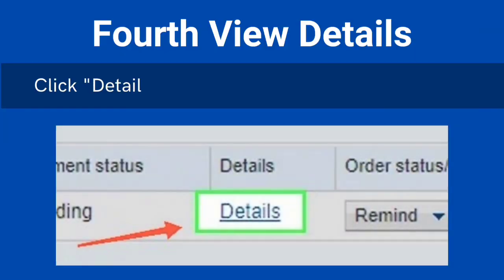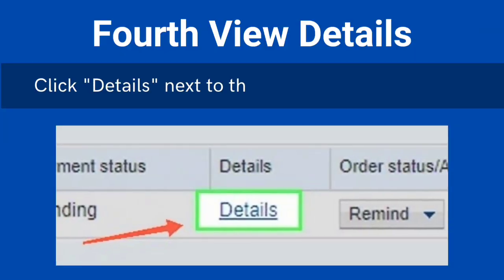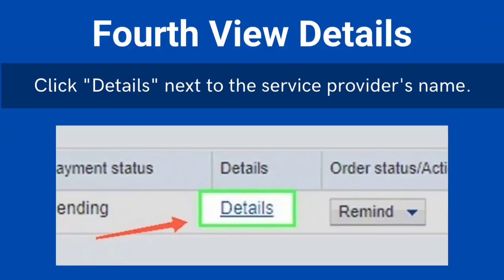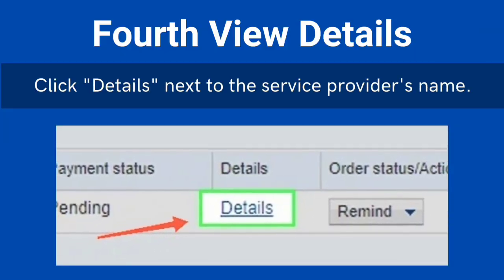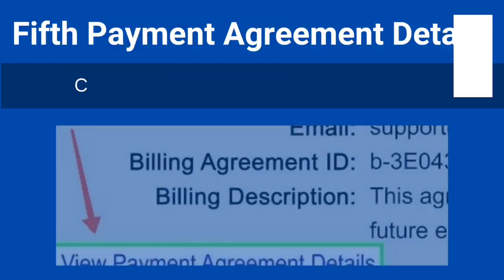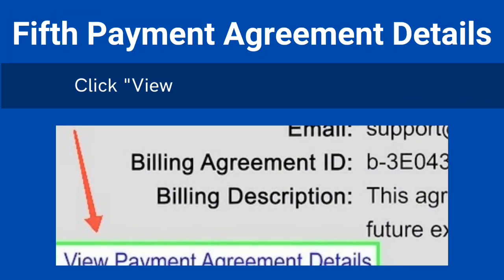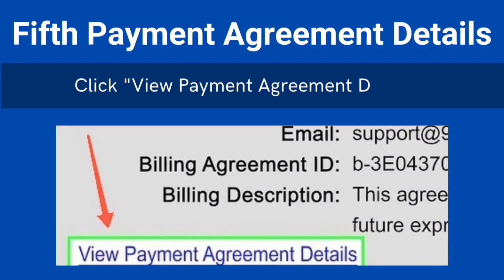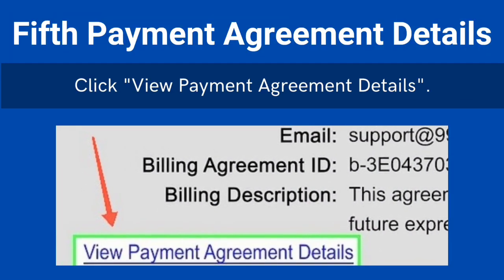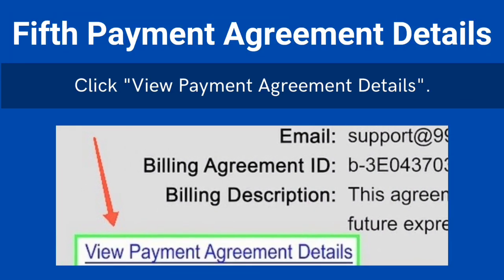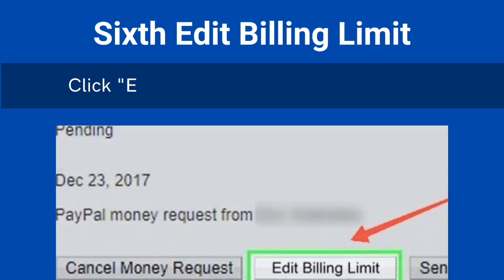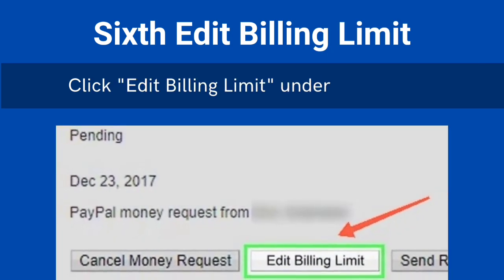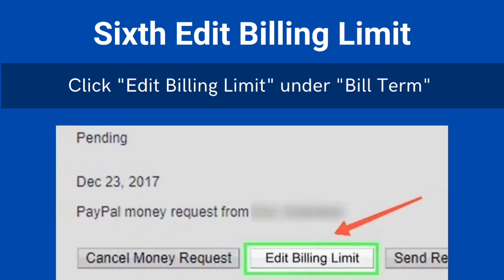Fourth, view details. Click Details next to the service provider's name. Fifth, payment agreement details — click View payment agreement details. Sixth, edit billing limit. Click Edit billing limit under Bill Term.